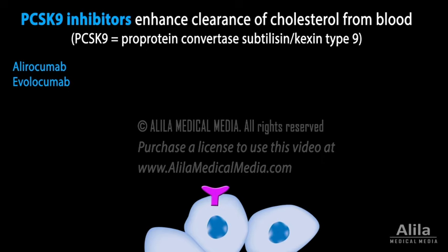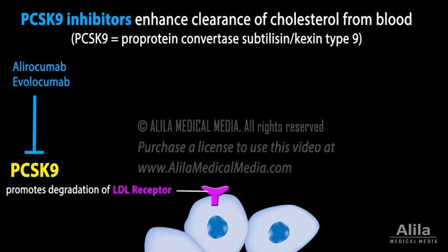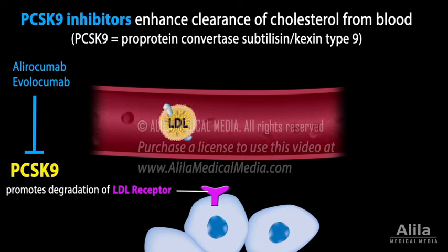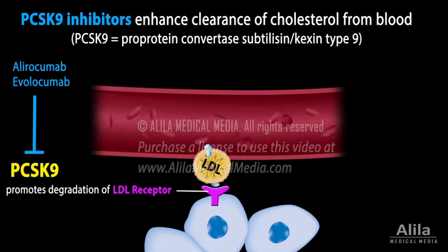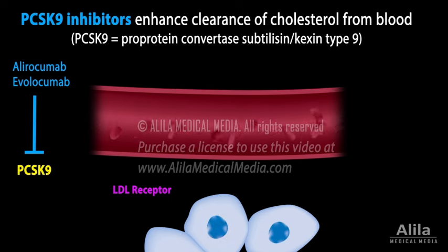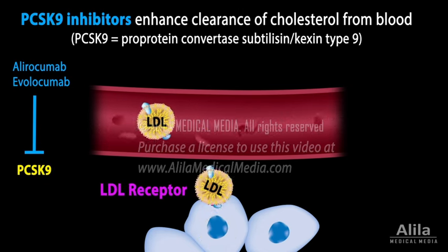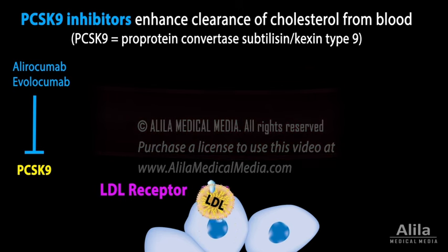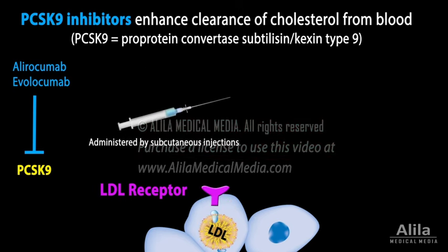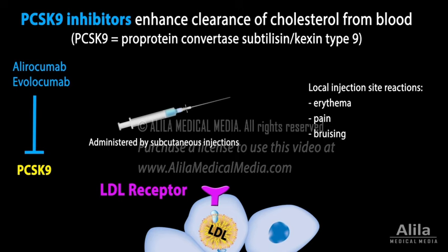PCSK9 inhibitors are monoclonal antibodies that bind to and inhibit PCSK9. PCSK9 is an enzyme that promotes degradation of LDL receptors, which are required for cellular uptake of LDL from the blood. Inhibition of PCSK9 increases LDL receptors, removing more LDL from blood plasma. These drugs are administered by subcutaneous injections and can cause local injection site reactions such as erythema, pain, and bruising.